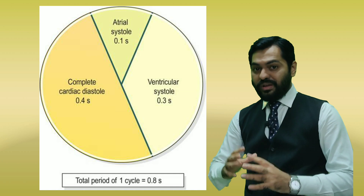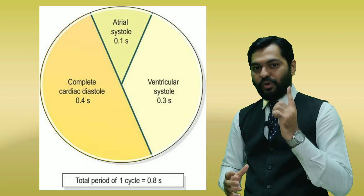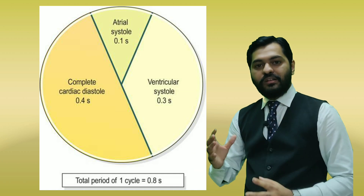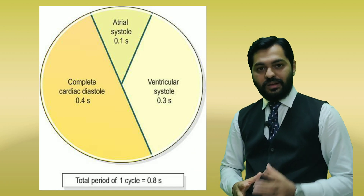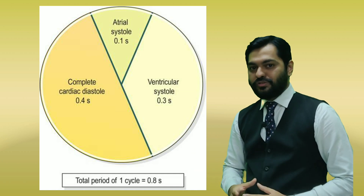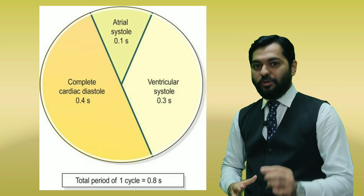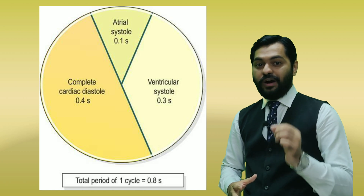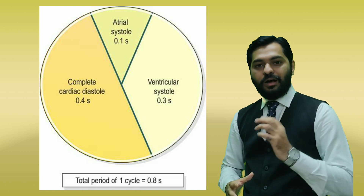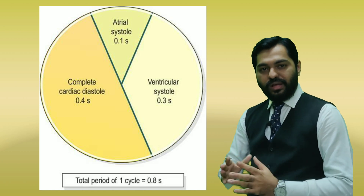When we calculate for one minute, that is 60 seconds, we get approximately 75 beats per minute based on a cardiac cycle duration of 0.8 seconds.